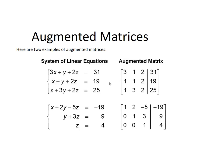Our second example of an augmented matrix: the system of equations x plus 2y minus 5z equals negative 19, which leads to a first row of our matrix as 1, 2, negative 5, negative 19.